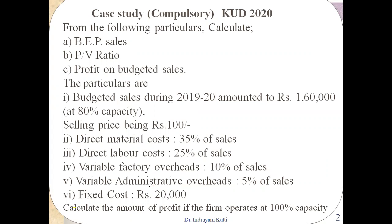From the following particulars, calculate: one — BEP; two — PV ratio; three — profit on budgeted sales. Three questions are asked: BEP, PV ratio, and profit on budgeted sales.